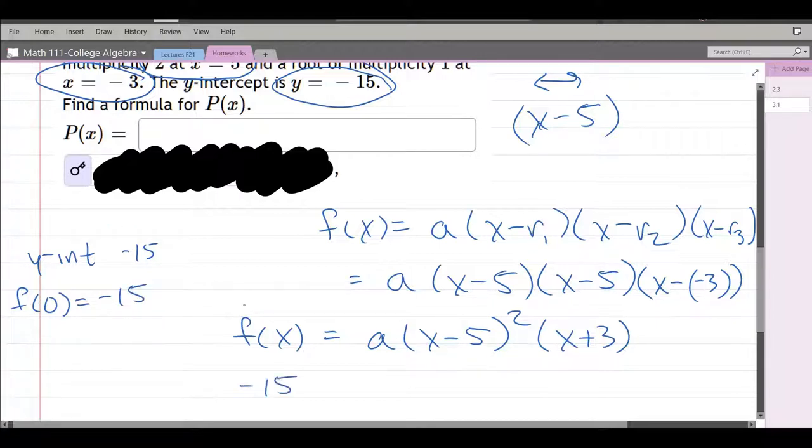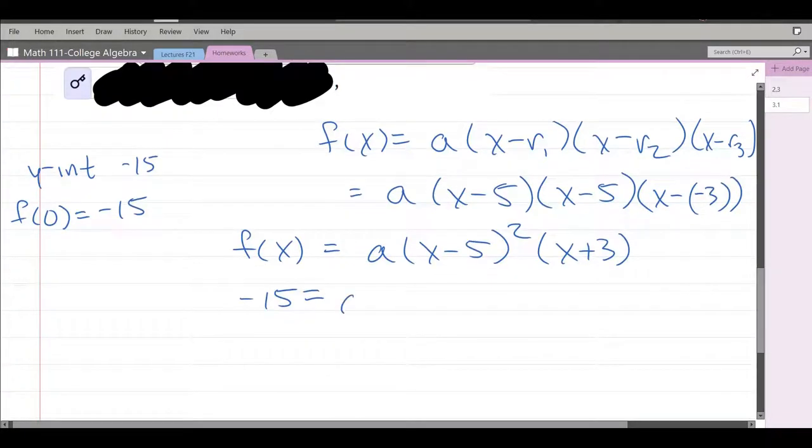So we have negative 15 equals, and on the right side, I'm going to replace x by 0. 0 minus 5 is negative 5, 0 plus 3 is just 3. So we have 5 squared is 25, times 3 is 75, and this is positive because we're squaring the negative.